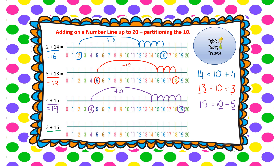Final question: 3 add 16. Partition 16 into a 10 and a 6. Start on 3 and jump 10 first: 3 add 10 takes me all the way to 13. I've added my 10; now I've got 6 ones to add: 1, 2, 3, 4, 5, 6. I've landed on 19, so 3 add 16 equals 19. This one might take a little more practice because you're doing that big jump of 10 before your ones.